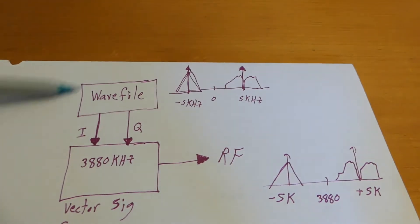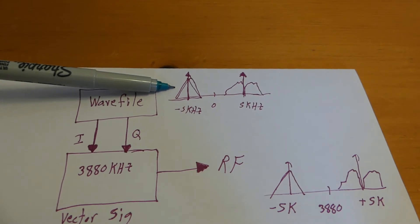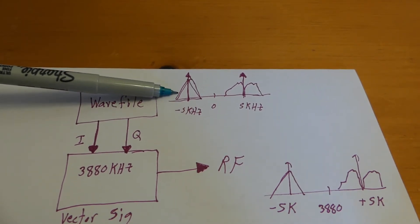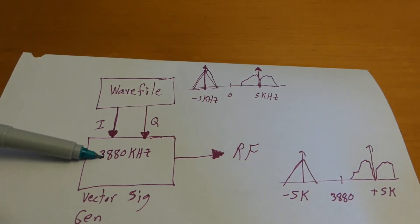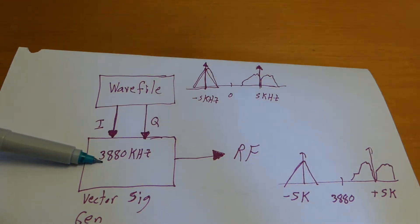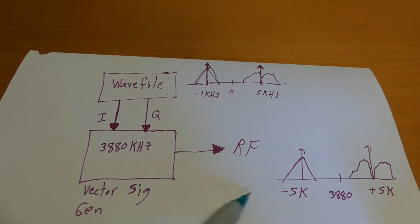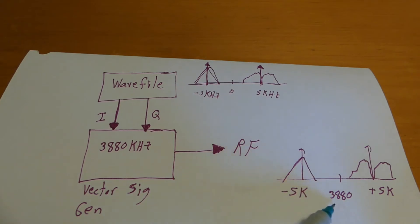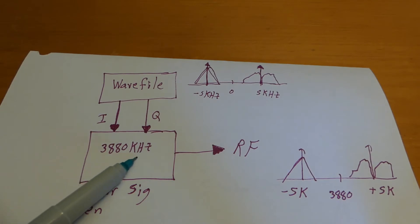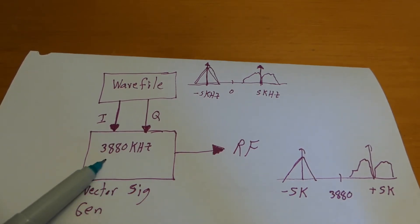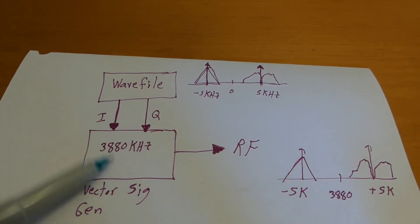Here's what we're going to do: we'll create this IQ baseband spectrum on a PC and make an audio wave file. We'll send that audio wave file out to our vector signal generator and set the vector SIGGEN center frequency to 3880 kilohertz. That's the baseband — this is how it comes out in the RF world. This is the center frequency we tune our vector SIGGEN to, and the baseband file streams into the vector signal generator.